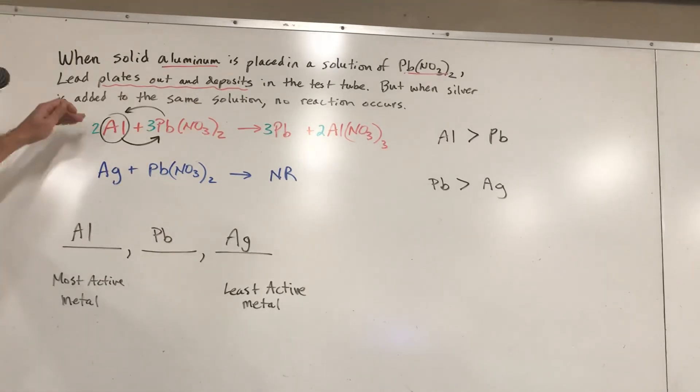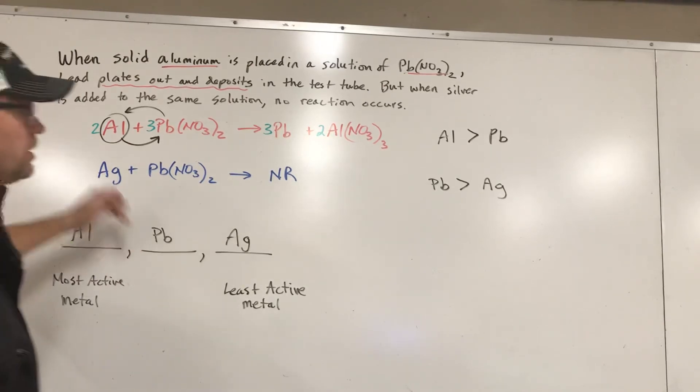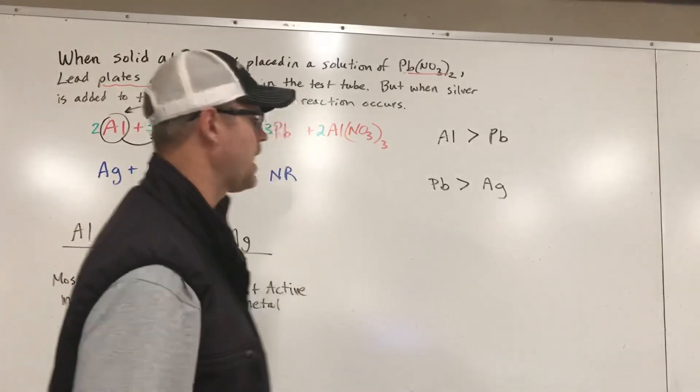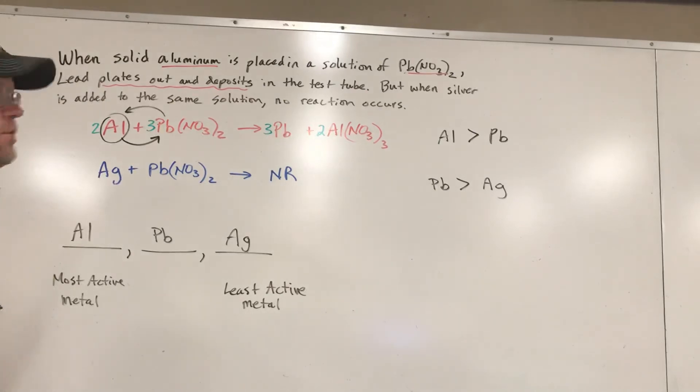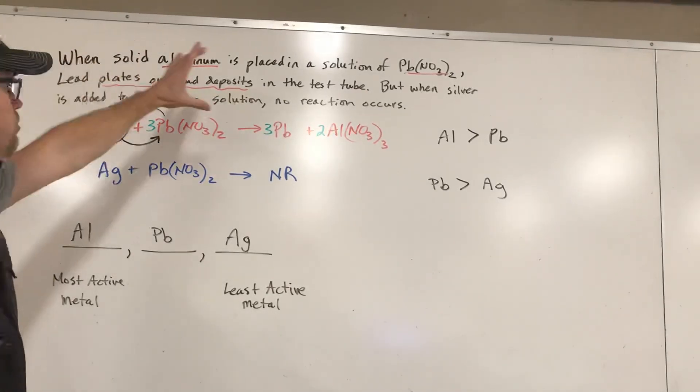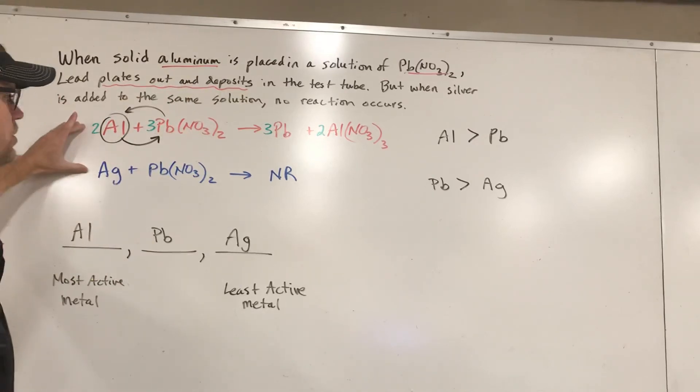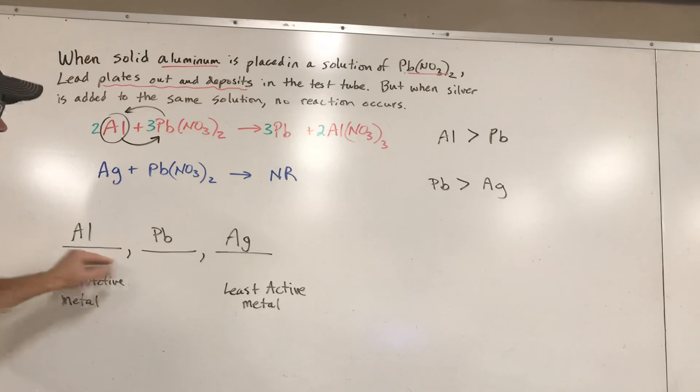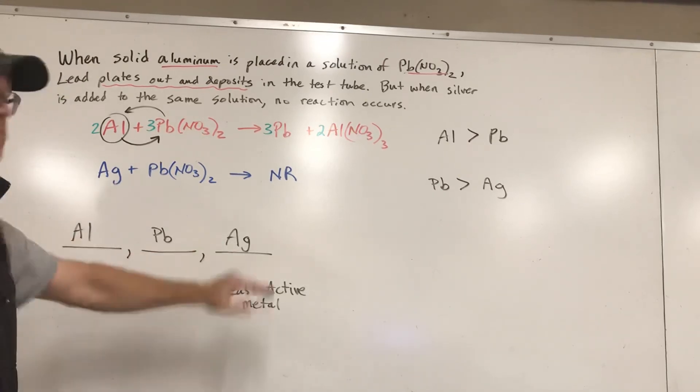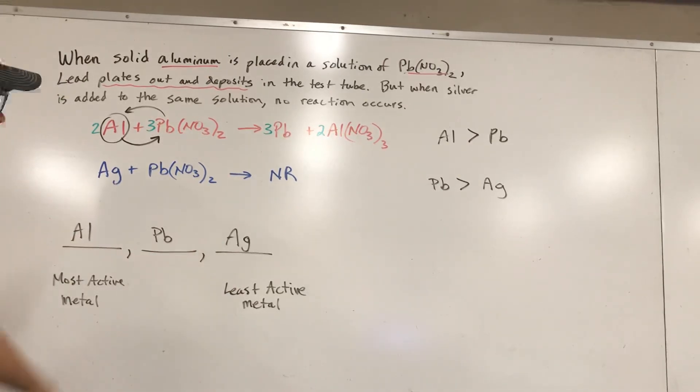And all we did was use whether or not these two reactions happened, which one happened, which one didn't, to make ourselves a list of which must be the most reactive and what must be the least. And so what you're going to see is several situations like this where you're going to have to take the description, turn it into some chemical equations, and then interpret what's going on and come up with a list of what's most reactive and what's least reactive and how they rank in between. There may be several of them there, but you'll have enough reactions to be able to interpret what's really going on.